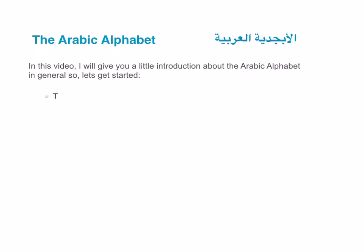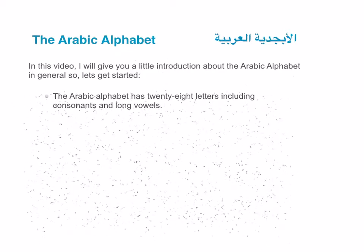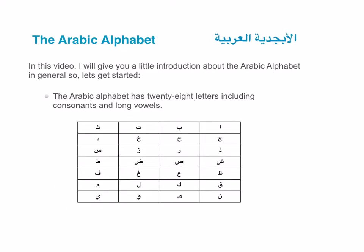The Arabic alphabet has 28 letters including consonants and long vowels. Don't worry, I will talk about them later in detail. For now, just have an idea.